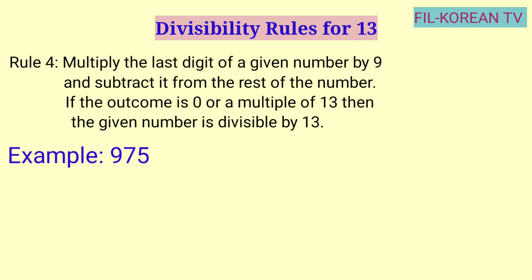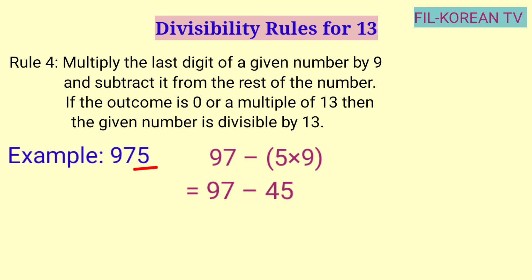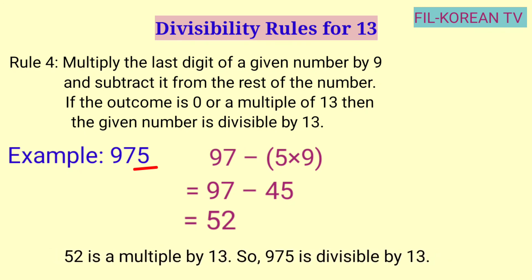Example: 975. Yung last digit ay 5. I-multiply natin itong 5 sa 9. At yung answer ay i-minus natin sa natitira pang number na 97. Magiging ganito siya: 97 minus 5 times 9. I-times natin ang 5 times 9: 5 times 9 equals 45. Then 97 minus 45 equals 52. Ang 52 ay multiple ng 13 — 13 times 4 equals 52. Dahil yung answer ay multiple ng 13, ibig sabihin itong given number na 975 ay divisible by 13.